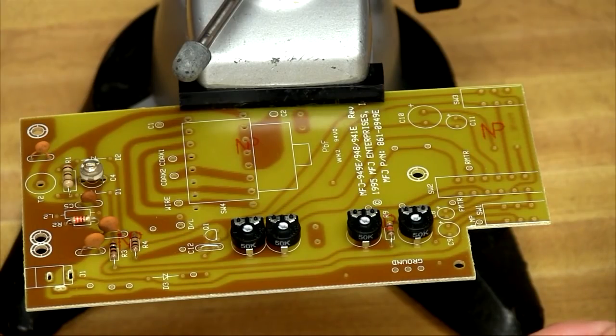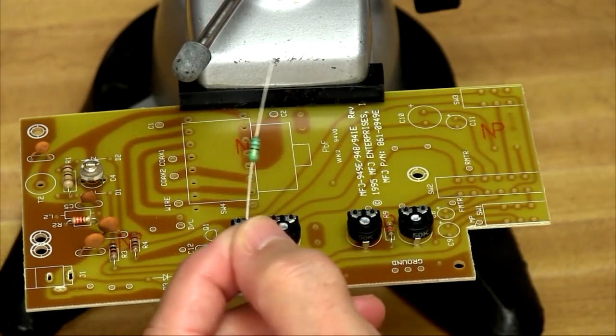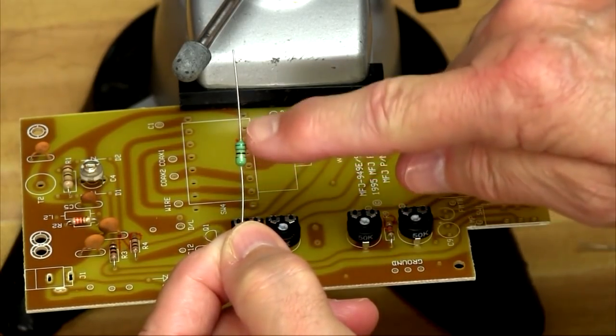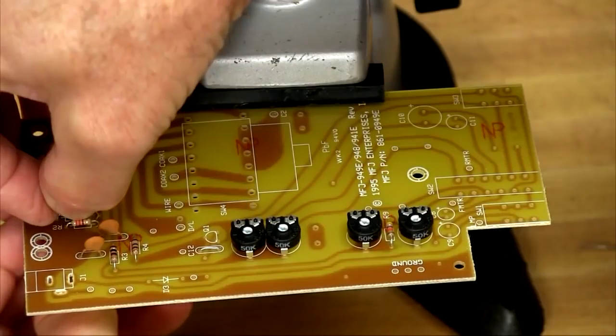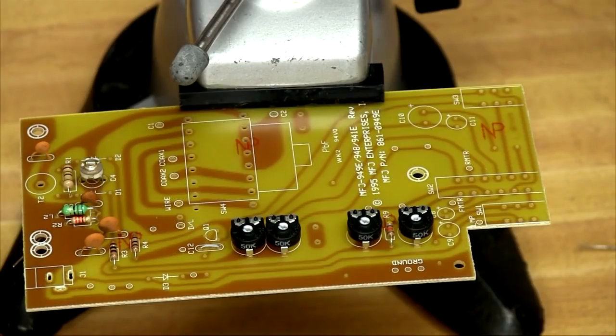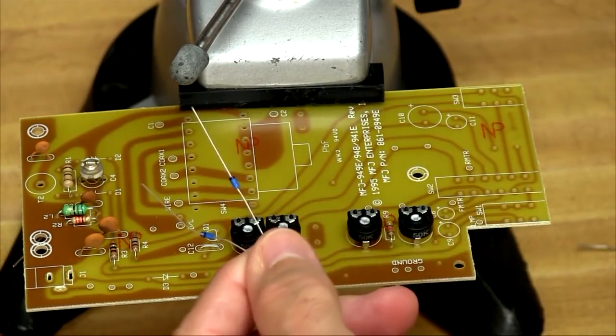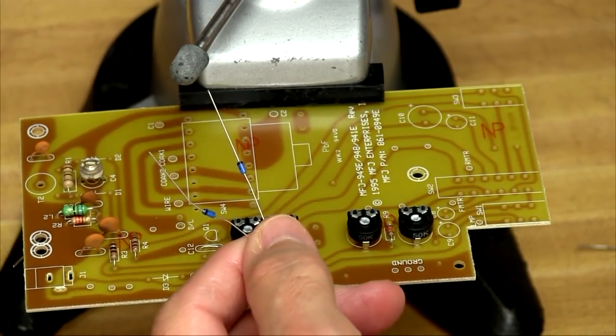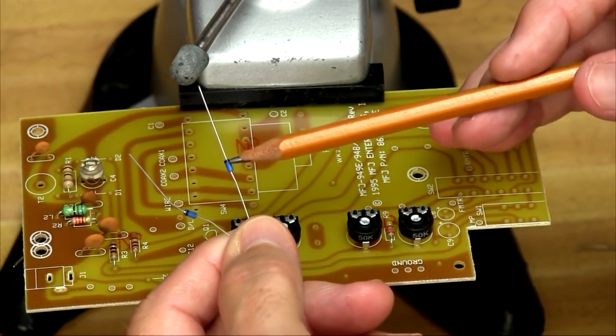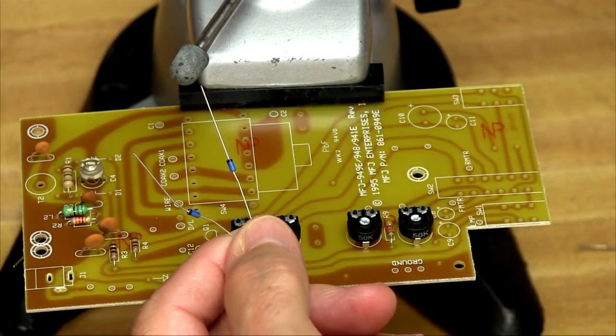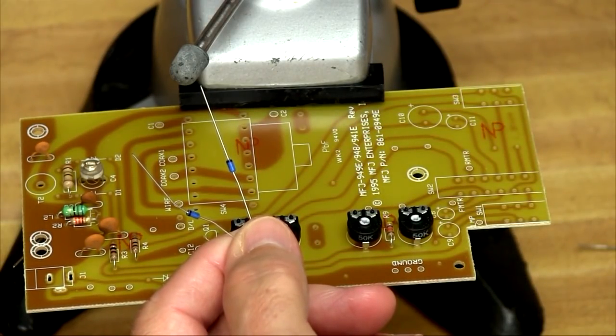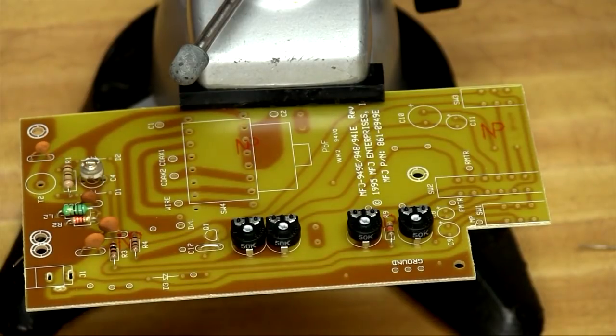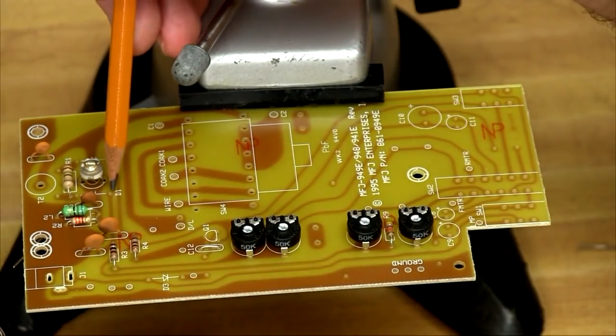And now we'll use the 680 microhenry choke, which looks like a resistor except in this kit the body is green. And now we'll find the two Schottky diodes in my kit. They're both blue. They're the only two diodes in the kit. And we've got to identify the cathode. That's the end here that's got the black band on it. And we'll install D1 and D2 in the board, making sure that we've got the cathode in the direction of the arrow.